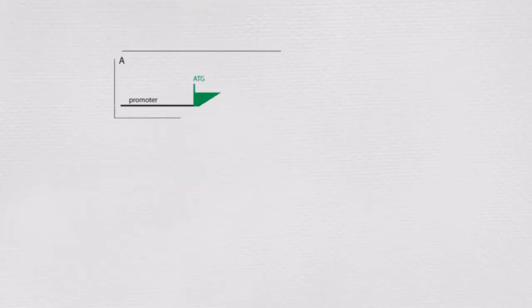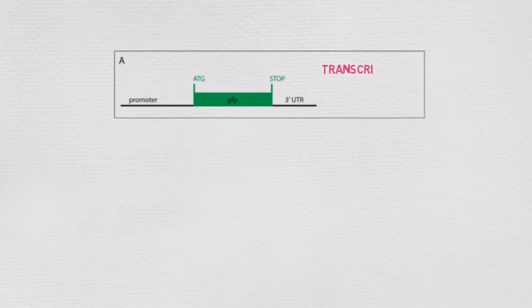Transcriptional reporter genes are joined to the controller region of the gene, more formally known as the promoter. This fusion product is usually integrated into the genome away from the native gene and contains its own stop codon. Therefore, this type of reporter monitors promoter activity and can only reveal what tissues transcribe the reporter in the organism.